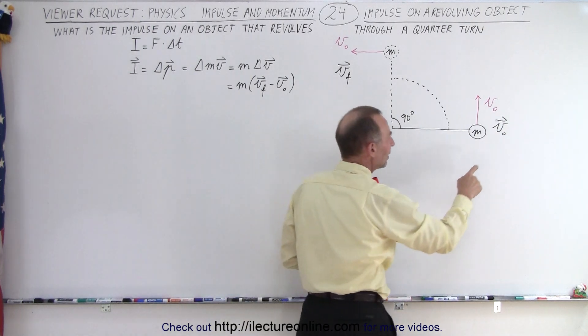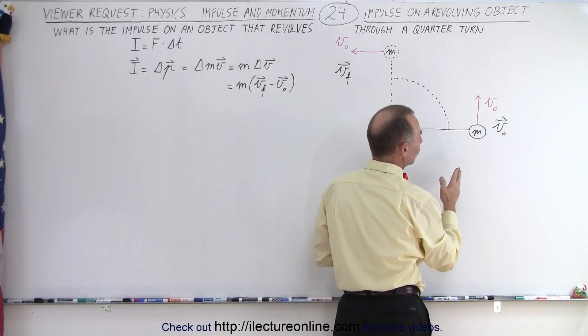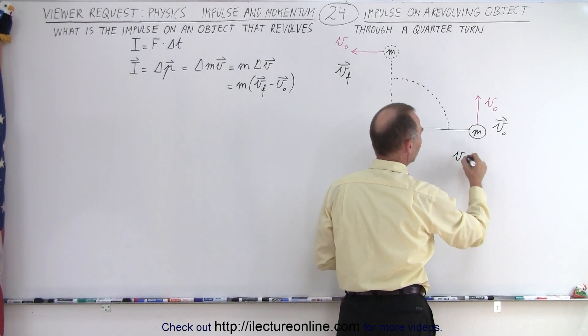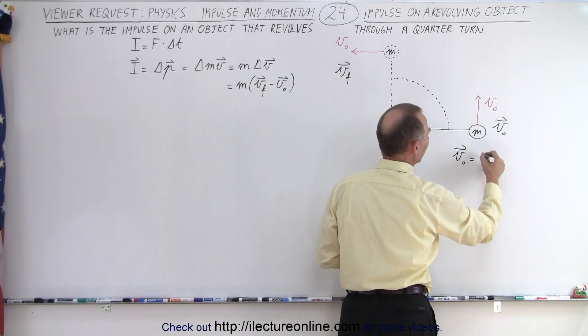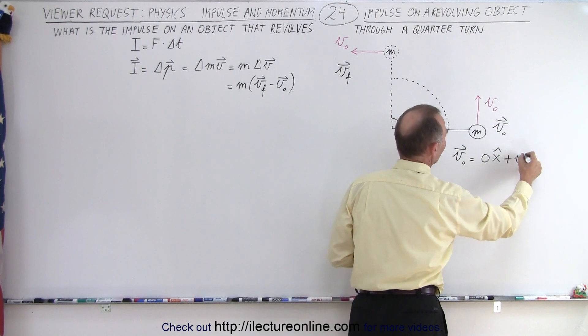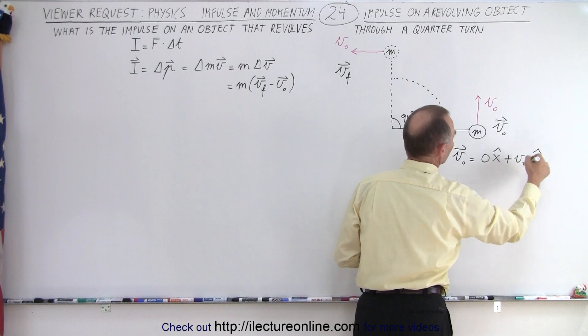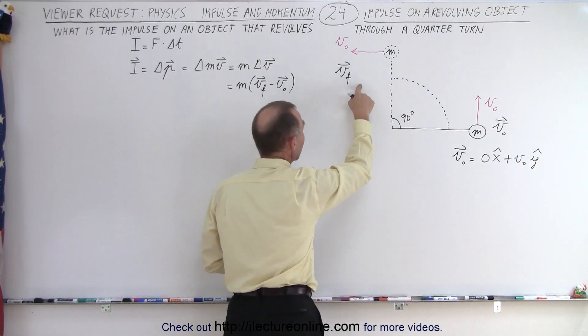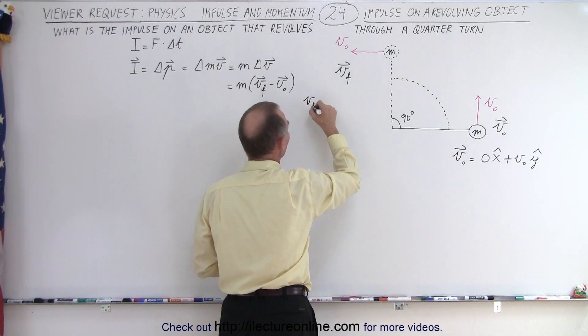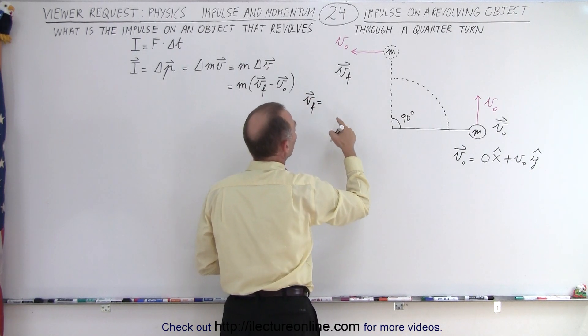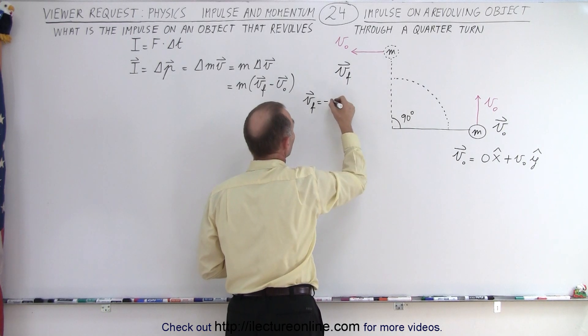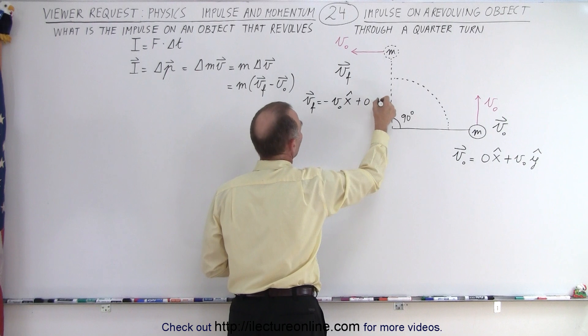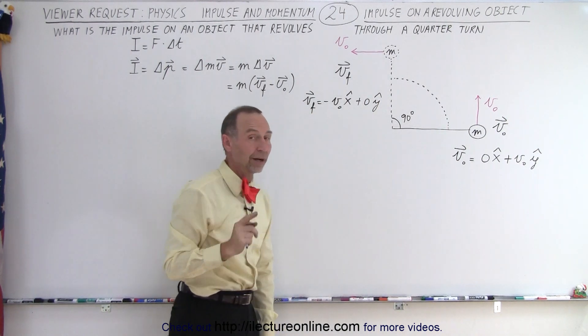So, how do we define the initial velocity? Notice there's only velocity in the y direction, and not in the x direction. So we can write that v initial here is equal to 0 in the x direction, and plus v sub nought in the y direction. Notice it's plus v sub nought because it's the positive y direction. Here, we can say that v final is equal to, well, we have a negative v sub nought in the x direction, and plus 0 in the y direction because there's no component in the y direction.